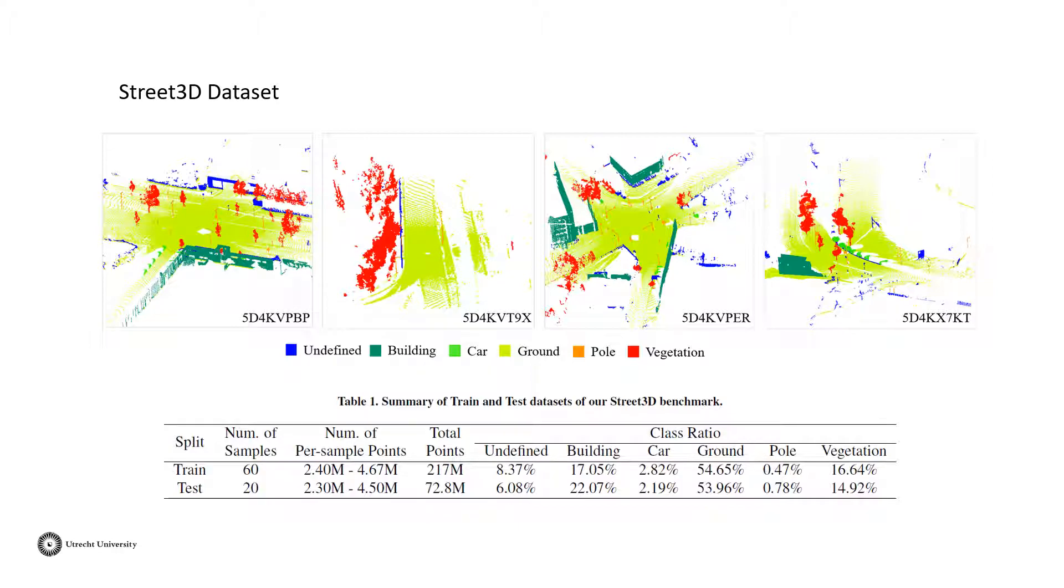Only the 5 meaningful classes will be evaluated. The 80 3D point clouds are randomly divided into training and test sets, with 60 for training and 20 for testing.